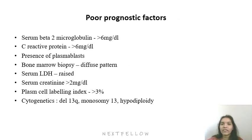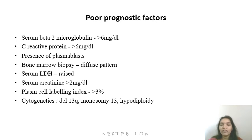Coming to poor prognostic factors of multiple myeloma: serum beta-2 microglobulin level greater than 6 mg/dL is considered a poor prognostic sign and is one of the best prognostic markers. Elevated C-reactive protein, presence of plasmablasts, diffuse pattern of bone marrow involvement, raised serum LDH, serum creatinine greater than 2 mg/dL, plasma cell labeling index greater than 3%, and cytogenetic abnormalities — predominantly deletion 13q, monosomy 13, and hypodiploidy — are all associated with poor prognosis.